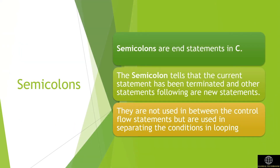Semicolons are end statements in C. The semicolon tells that the current statement has been terminated and the statements following are new statements. They are not used in between control flow statements, but they are used in separating conditions in looping.